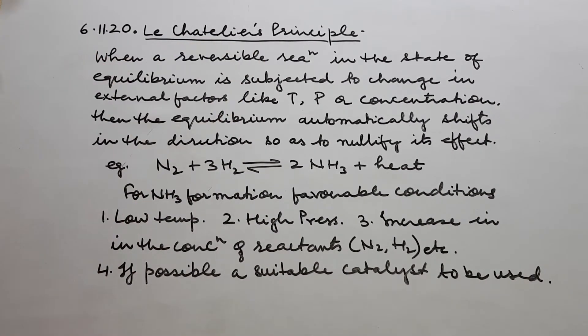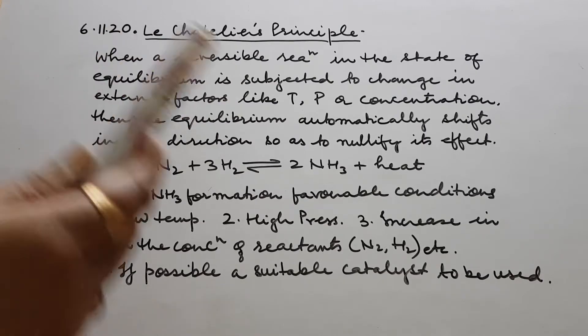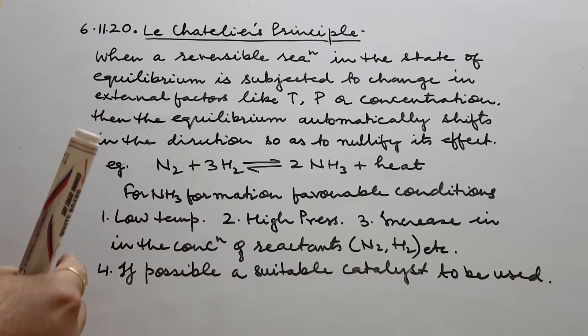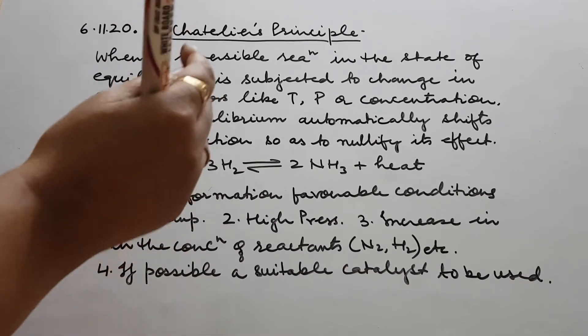When a reversible reaction, I think it's in 10th also, but it's not taken up in detail there. One thing children, in the previous video, when I was explaining the characteristics of chemical equilibrium, I found out towards the end that by mistake, I think it was slip of tongue.